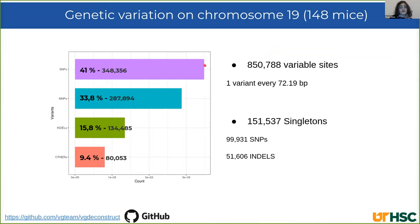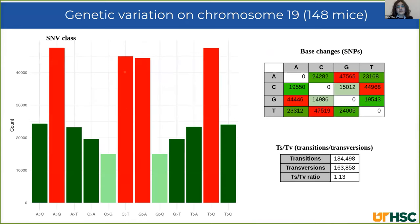On this pangenome, I called variants with VG deconstruct. This is the total number of variable sites, and the variant density is one variant every 72 base pairs. This is the number of singletons. The majority of variants are SNPs. The transition-to-transversion ratio is very low for SNPs because here we are considering all samples and all variability present in the pangenome.